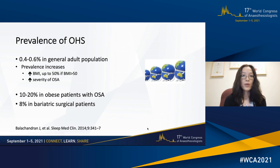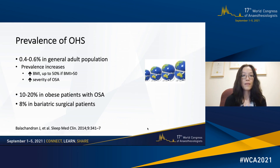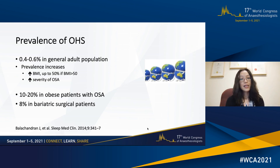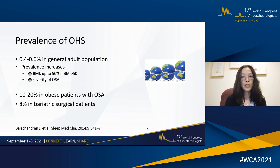The prevalence of OHS has been estimated to be about 0.4 to 0.6% in the general adult population. However, the prevalence does increase with increasing BMI as well as increasing severity of OSA. In sleep clinics, the prevalence is estimated to be between 10 to 20% of obese patients with OSA. In the bariatric surgical population, it's estimated that about 8% of these patients also have OHS.